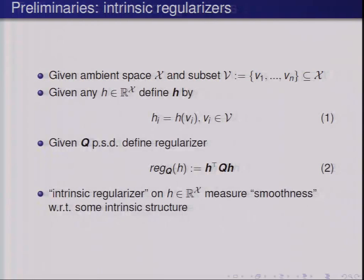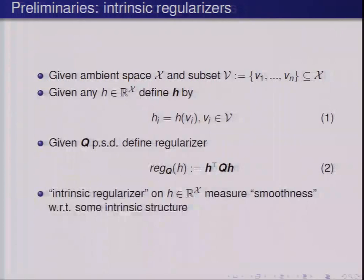An additional preliminary is a notion of an intrinsic regularizer. Given our space X and a set of points V drawn from X, and any function mapping X to the reals, we define the vector h as the point evaluations of function h on the set V — that's equation one. Given any positive semi-definite M×M matrix Q, we define a regularization functional as a quadratic form. Certain regularization functionals are called intrinsic regularizers when they're designed to measure smoothness with respect to intrinsic structure in the space. They're not fully defined yet, because there are different kinds of structure and smoothness you might want to learn.